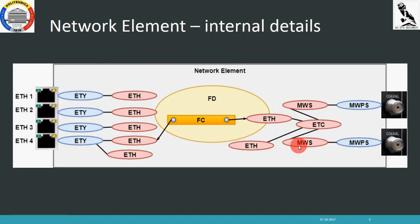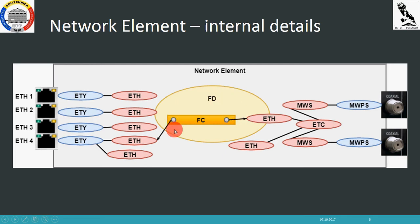This is how the internal details of a network element look like. Based on the core model and microwave model, we have several types of objects. For example, for an air interface we will have a microwave physical section object and then several other layers that connect in the end to either another air interface or to an ethernet physical interface. All these interfaces and objects are represented inside each Docker container.